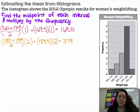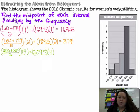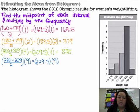My third interval is from 200 to 219. So I add those, divide by 2, and multiply it by 4 because there are 4 women in that interval. 200 plus 219 gives me 419, divided by 2 gives me 209.5 times 4 gives me 838. My next interval is 220 to 239. 220 plus 239 divided by 2 is 229.5 times 9 is 2065.5.